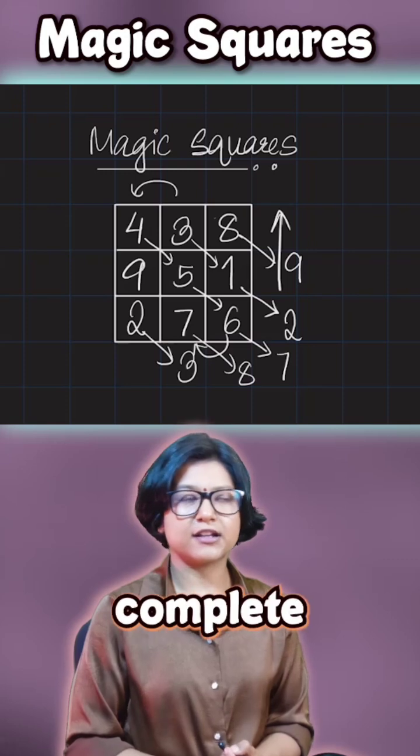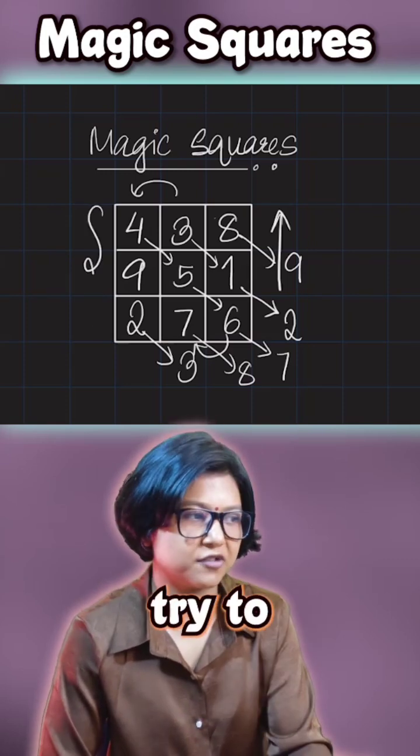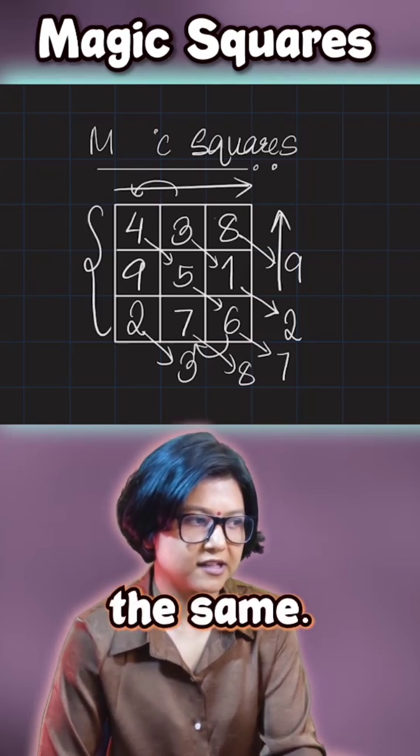So, finally, if I'll go and complete, the magic square is completed. You try to find the sum from all sides. Your sum will still be the same. Thank you.